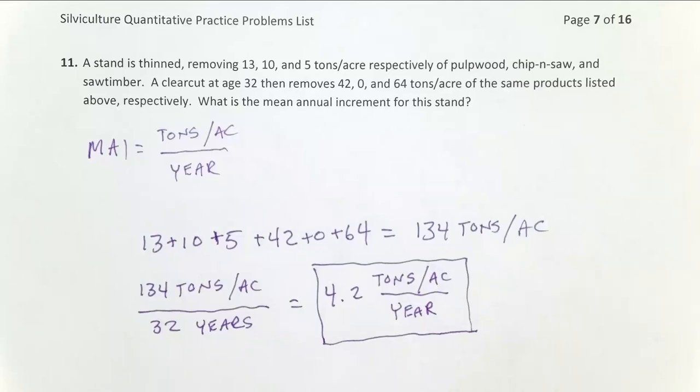And if everything's going fantastic, you have great silviculture, great genetics, and a really good site, you get lucky, you might be hitting 12 tons per acre per year. So that gives you kind of a range to interpret this number.